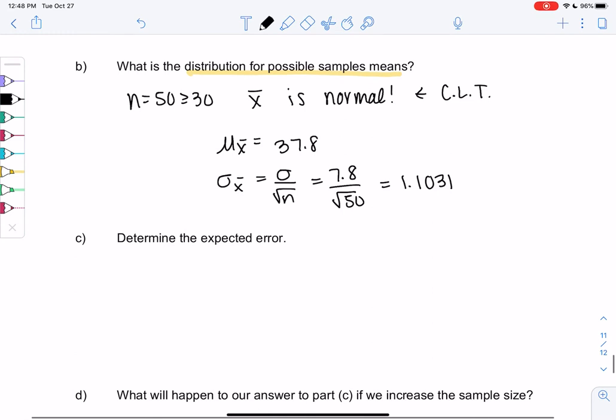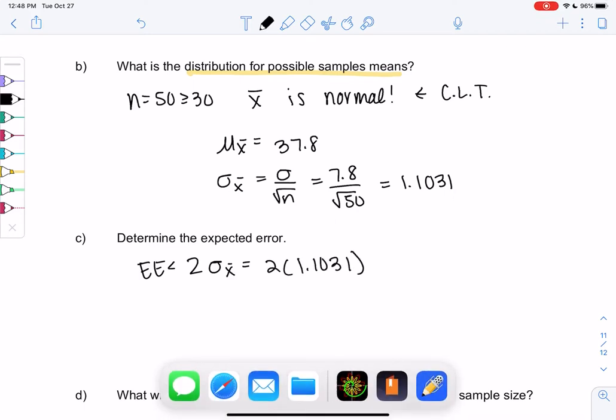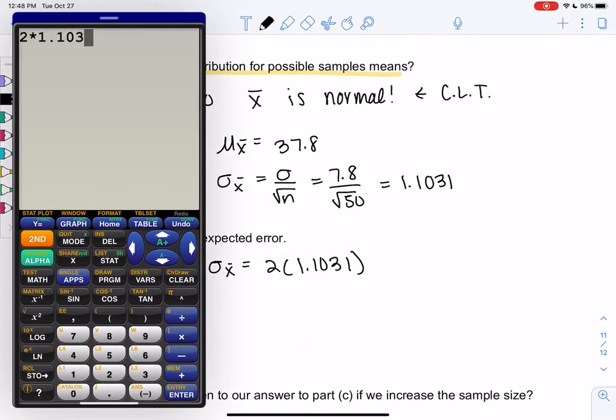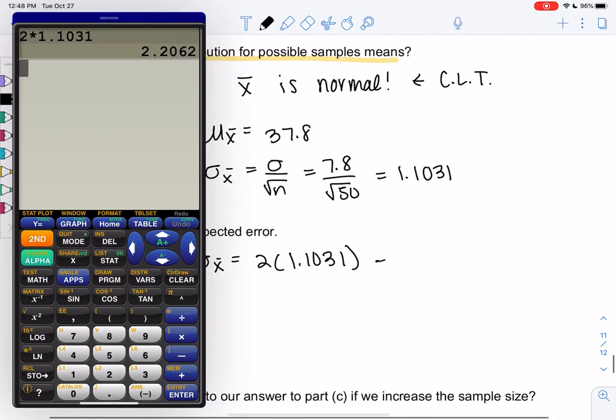How about the expected error? The expected error is always two standard deviations. We're talking about the means, so we're going to use σ with the x̄. It'll be two times 1.1031, and I get an expected error of about 2.2062. Basically, the effectiveness should be within 2.2062 days.